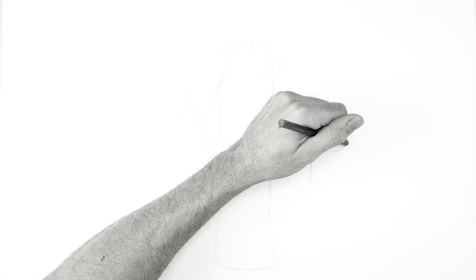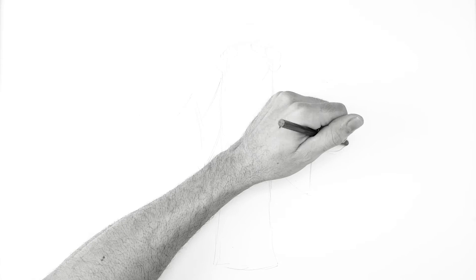And for the hands, we're basically going to create two ovals. This hand's going to be open. I'm going to save that until the end, and then this hand's going to be closed, so it's going to be more circular.